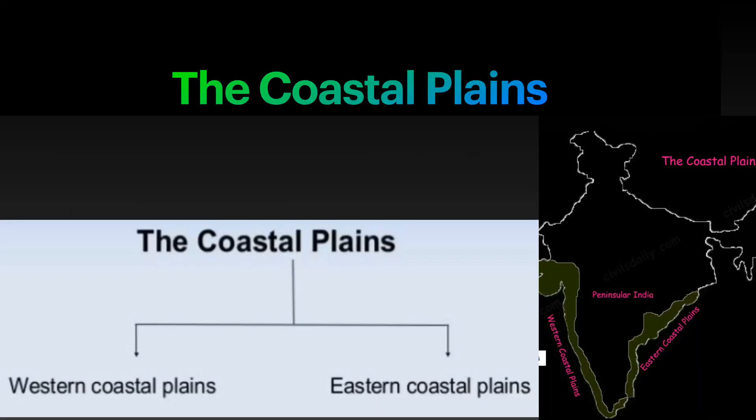In the previous video, we learned that the Southern Plateau covers most of the Indian Peninsula. The plateau is surrounded by narrow coastal plains on the eastern and the western sides. On the west, between the Western Ghats and the Arabian Sea, is the Western Coastal Plain, and on the east, between the Eastern Ghats and the Bay of Bengal, is the Eastern Coastal Plains.